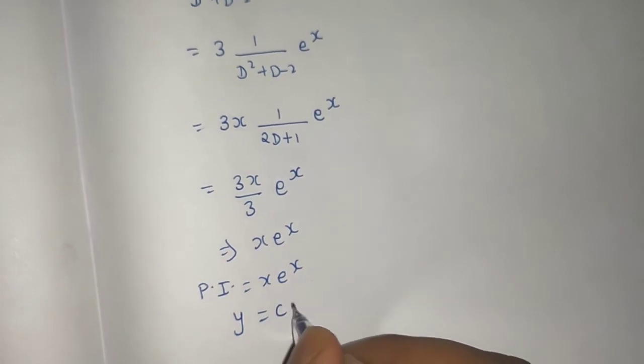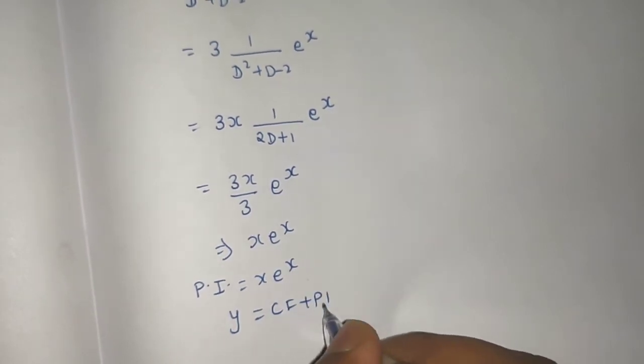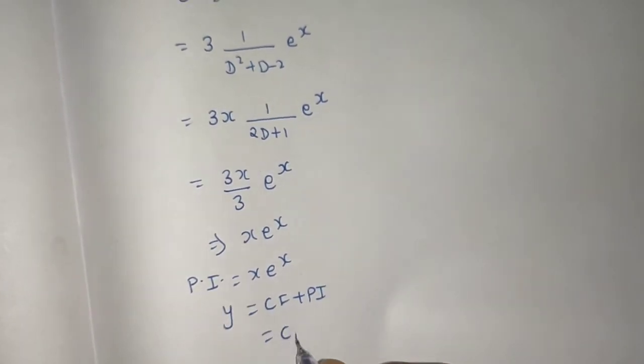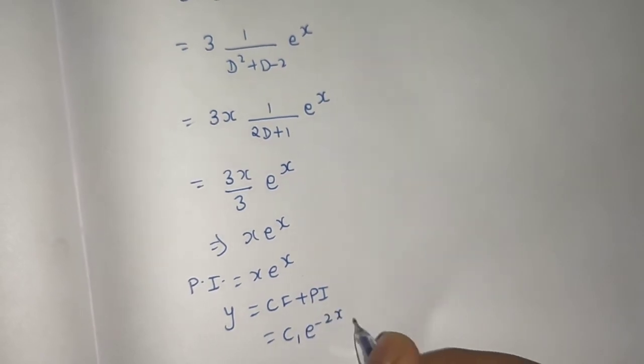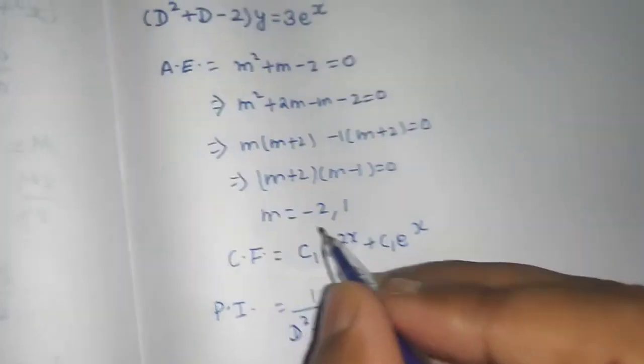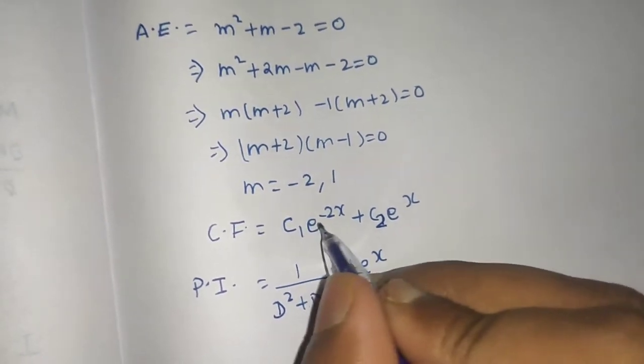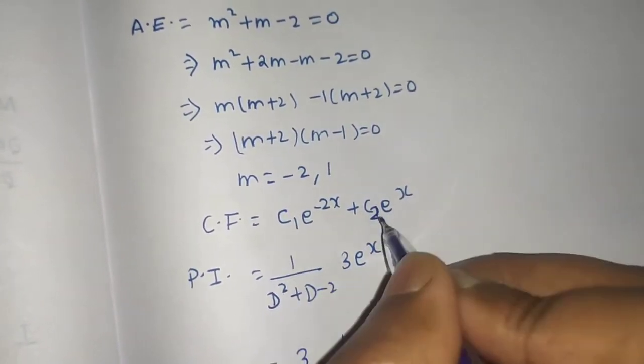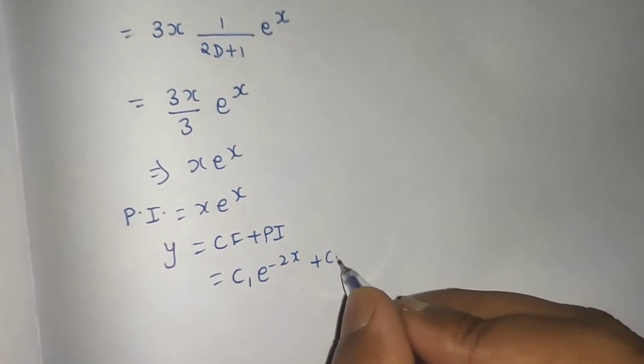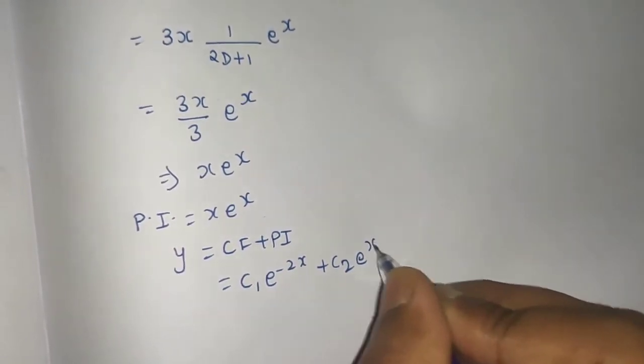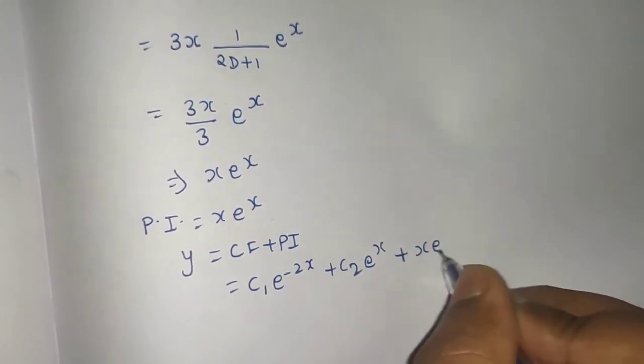Final solution is of the form y equals to cf plus pi. Your cf was c1 e power minus 2 x plus c2 e power x plus your pi which is x e power x.